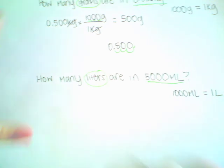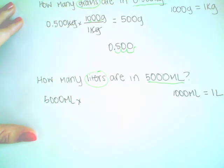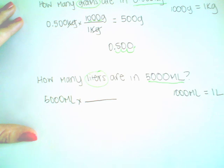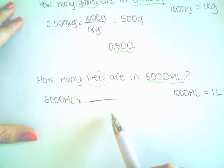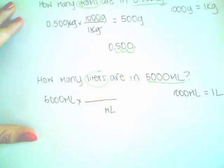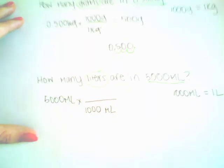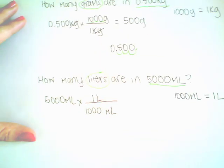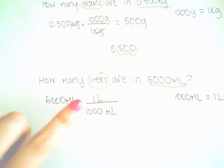Again, you start by writing down the given information, which is five thousand milliliters, and multiply that by the conversion factor written as a fraction. I have milliliters on the top, so we have to put milliliters on the bottom — these units must match. Whichever unit you find here, you need to put that same unit on the bottom. There are one thousand milliliters, so I write one thousand next to milliliters and one liter on top. Multiply the numbers on the top — five thousand times one — and divide by one thousand. Milliliters cancels out.